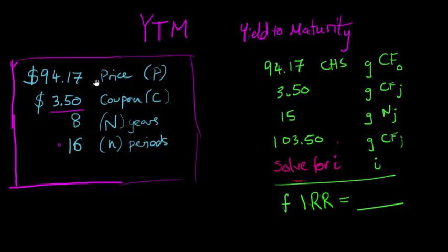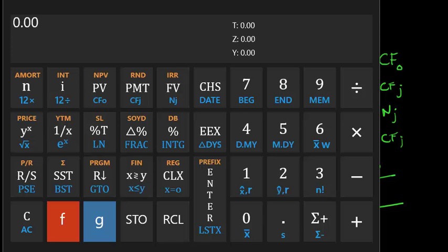So the entries into the calculator are going to be, first of all, the cash flow to purchase the bond, $94.17, change sign to make it a negative cash flow from our perspective. Then G, CF zero, so function G, cash flow zero. So let's do that now, so $94.17, negative cash flow. The blue is the G function, and then we're doing cash flow at time zero.